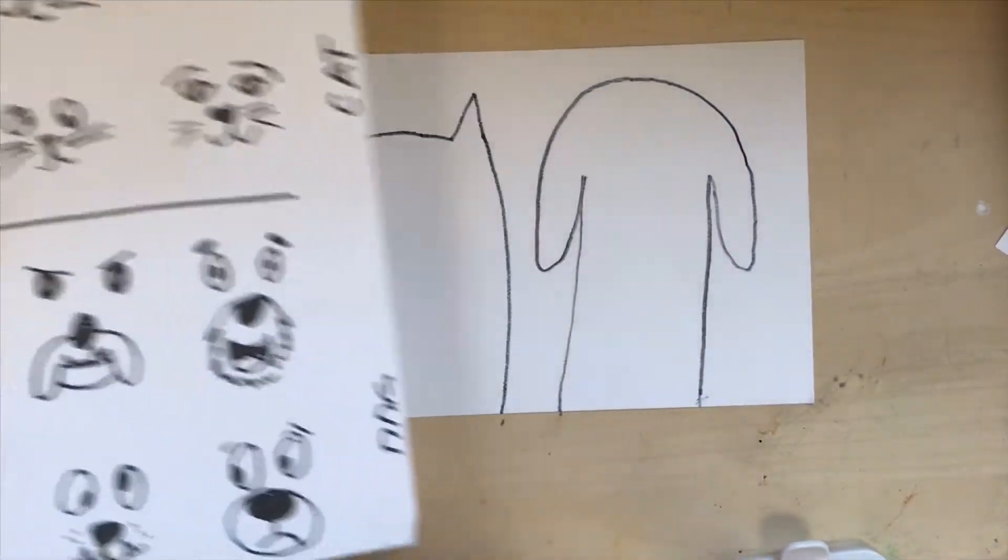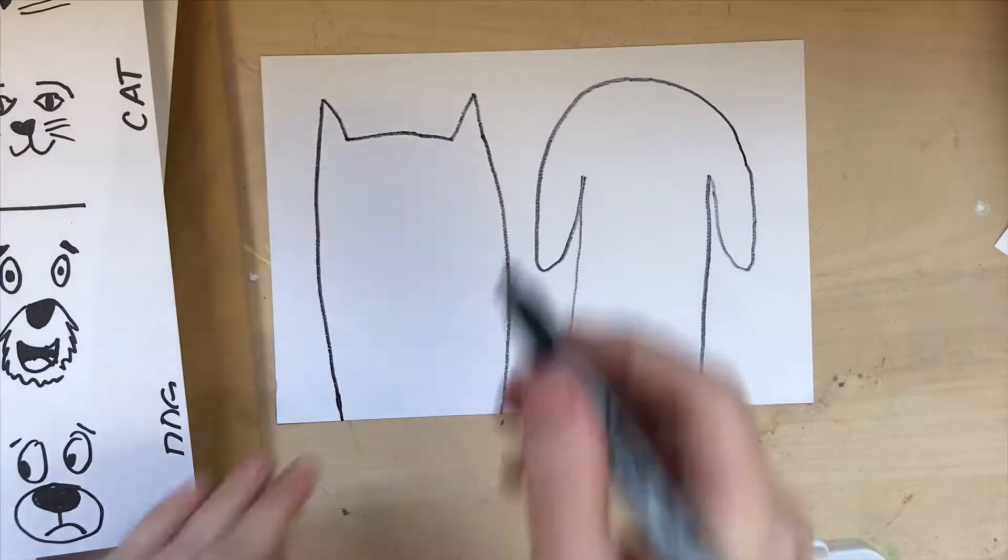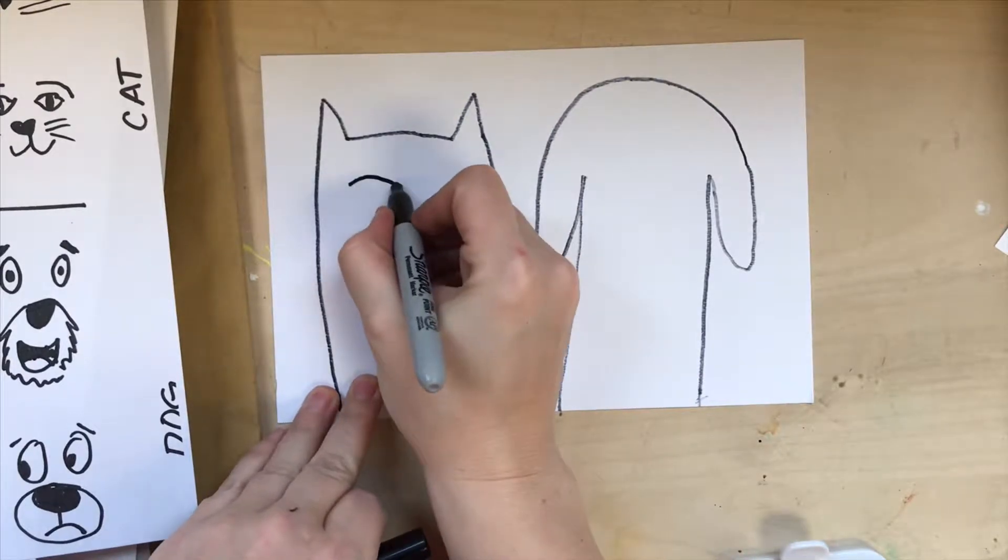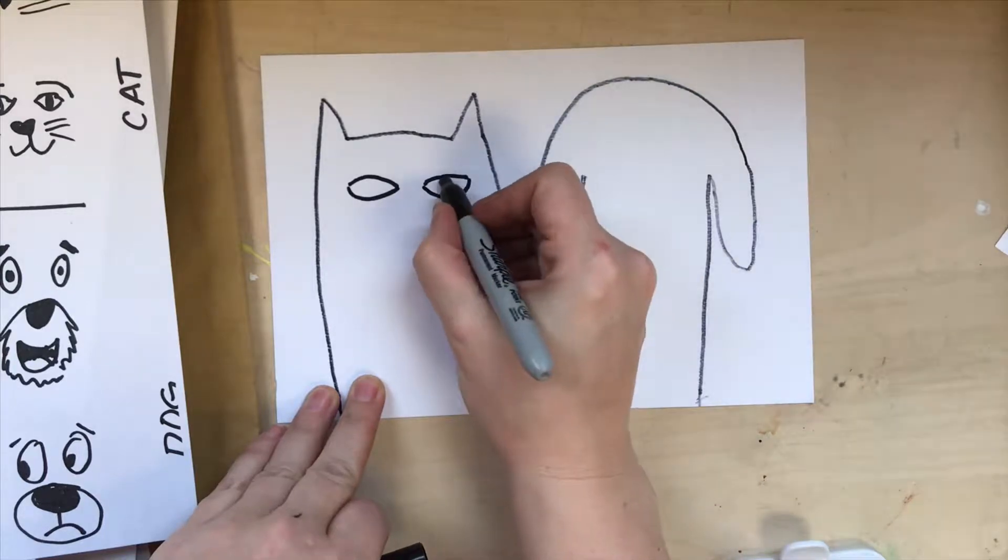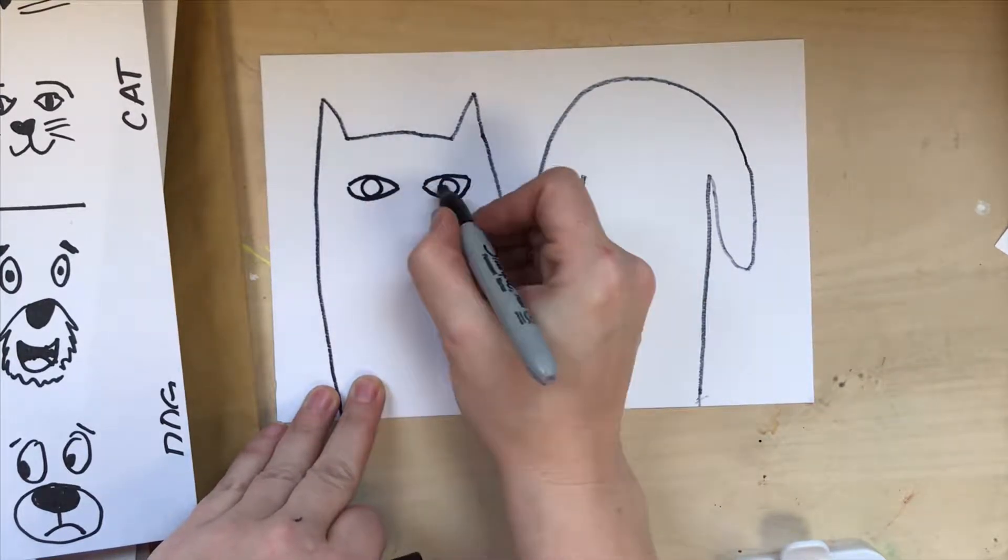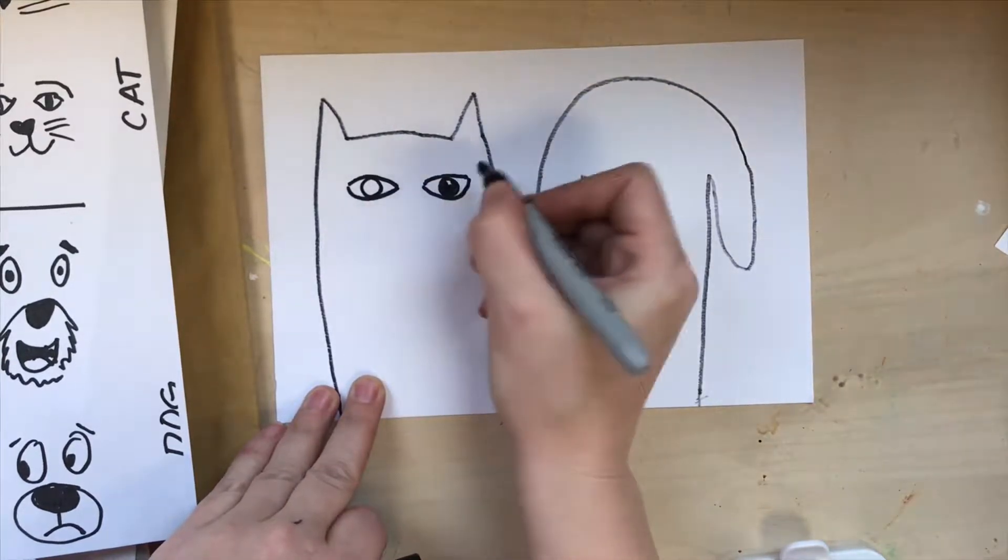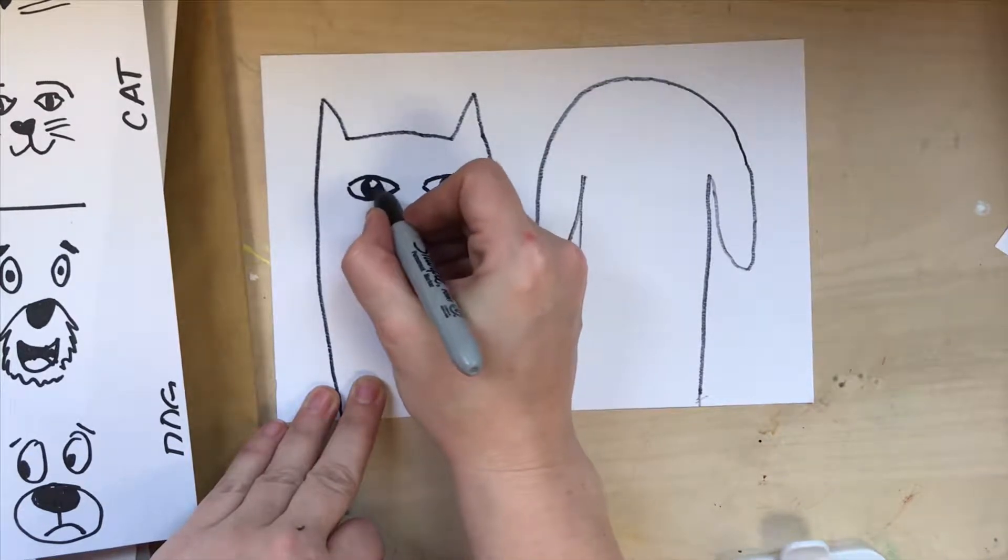You're going to have a sheet that helps you decide on what facial expressions you want your cat or dog to have. One good way to make cat eyes is with an upper and lower U to make a football shape with a circle in the middle. That's kind of a cat eye shape.